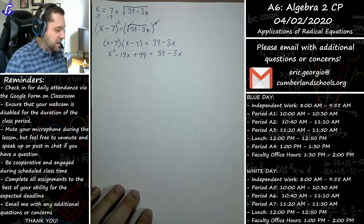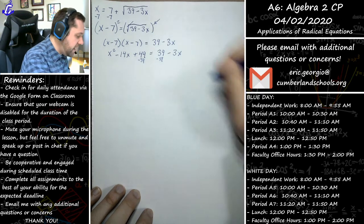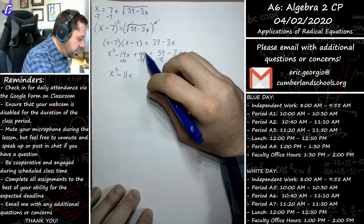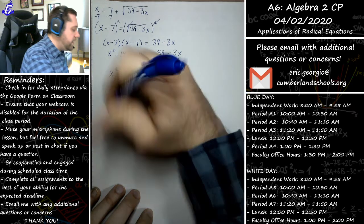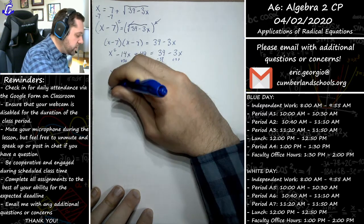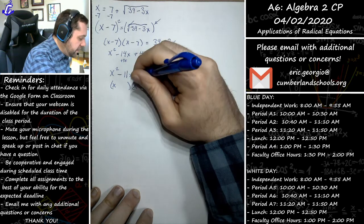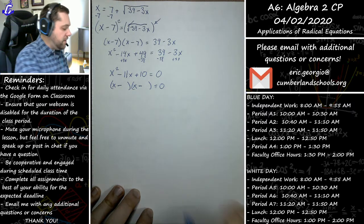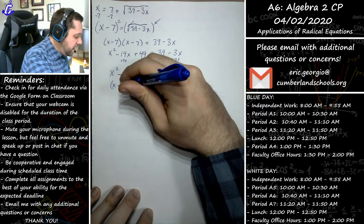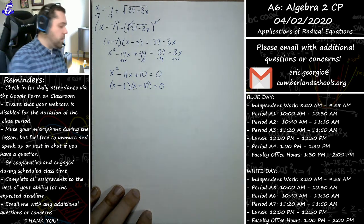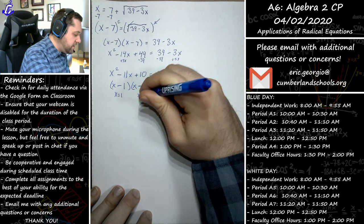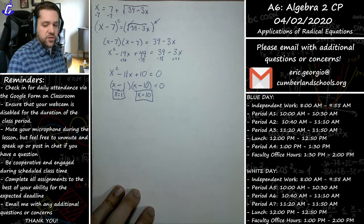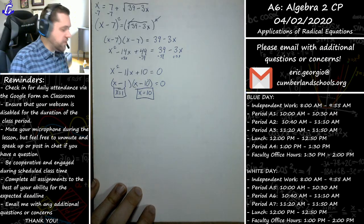The x² term appears — time to factor, but first set equal to zero. Subtract 39 and add 3x to both sides: x² minus 11x plus 10 equals zero. Factoring into two binomials: (x minus 1)(x minus 10) = 0, giving potential solutions x equals 1 and x equals 10. I say 'potential' because we must check for extraneous solutions here.